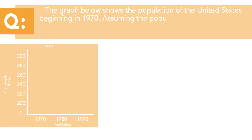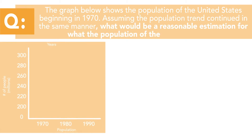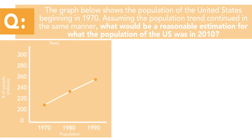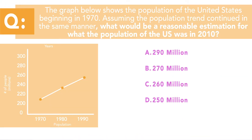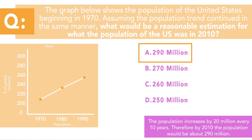Let's move on to the third question. The graph on the screen shows the approximate population of the United States beginning in 1970. Assuming the population trend continued in the same manner, what would be a reasonable estimation for the population of the United States in 2010? The answer options are 290 million, 270 million, 260 million, or 250 million. The correct answer is 290 million — the population increases about 20 million people every 10 years, so the estimated population in 2010 would be 290 million.